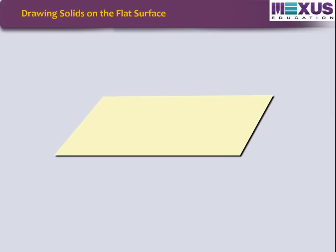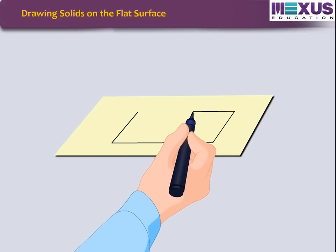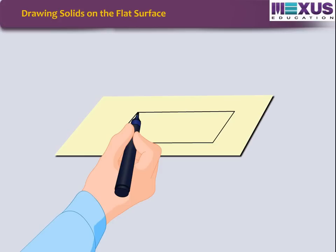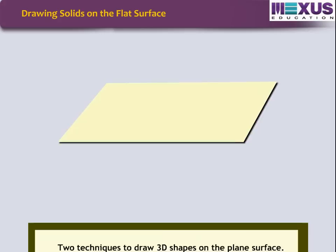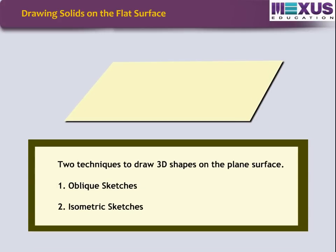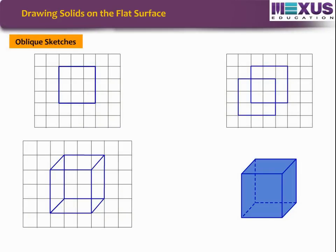The two-dimensional surface on which we draw an image is usually flat. So when we try drawing a solid shape on paper or a board, the image appears a little distorted. However, this is just an optical illusion. Let us learn two techniques, oblique sketches and isometric sketches, which will help to draw 3D shapes on a plain surface. Let us learn about oblique sketches first.